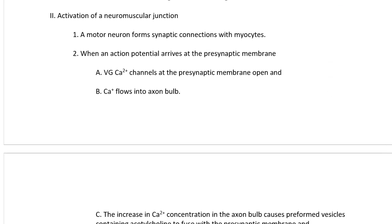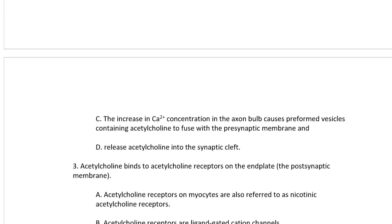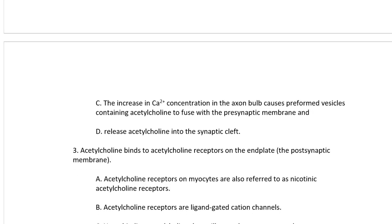Activation of a neuromuscular junction. A motor neuron forms synaptic connections with myocytes, so instead of synapsing with another neuron, it synapses with its effector cell. In the case of a motor neuron, the effector cell is the muscle cell — the myocyte. When an action potential arrives at the presynaptic membrane, voltage-gated calcium channels at the presynaptic membrane open, and calcium flows into the axon bulb. The increase in calcium concentration causes preformed vesicles containing acetylcholine to fuse with the presynaptic membrane and release acetylcholine into the synaptic cleft.